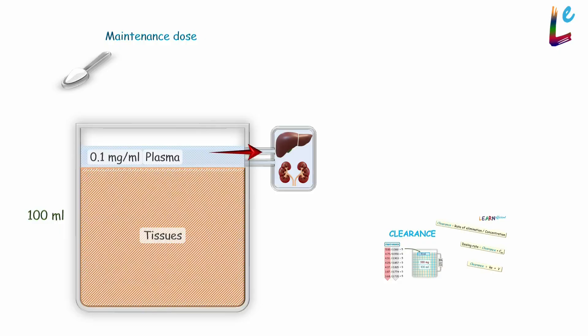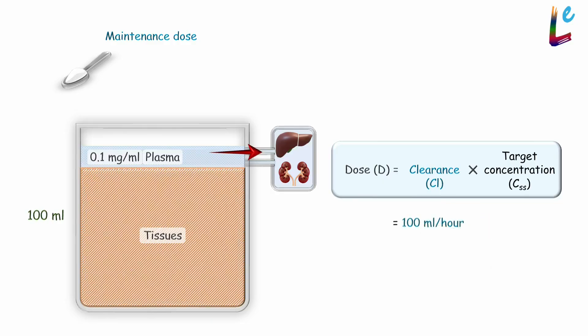From the video on clearance, we know that the equation to calculate this dose is maintenance dose equals clearance multiplied by target steady state plasma concentration, which equals 100ml per hour multiplied by 0.1mg per ml, which equals 10mg per hour. So adding drug at 10mg per hour will maintain the plasma concentration at 0.1mg per ml.